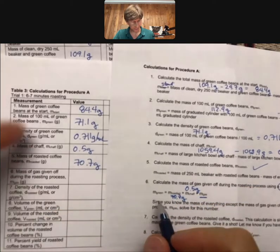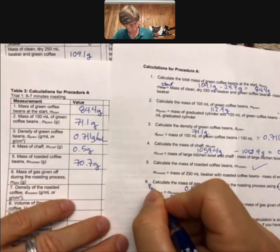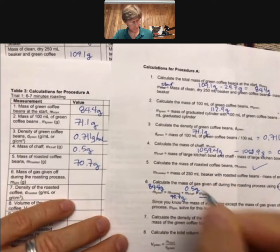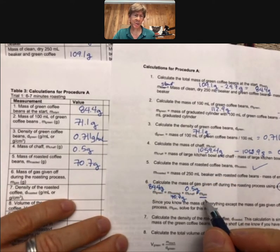And the mass of our green beans is 84.4 grams. So the only thing we don't know is mgas.